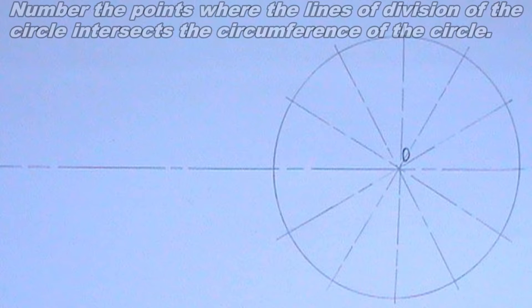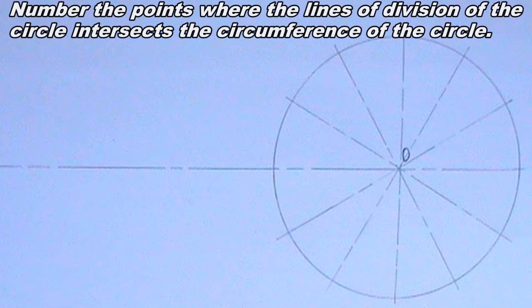Next, I will number the points where the lines of division of the circle intersect the circumference of the circle.